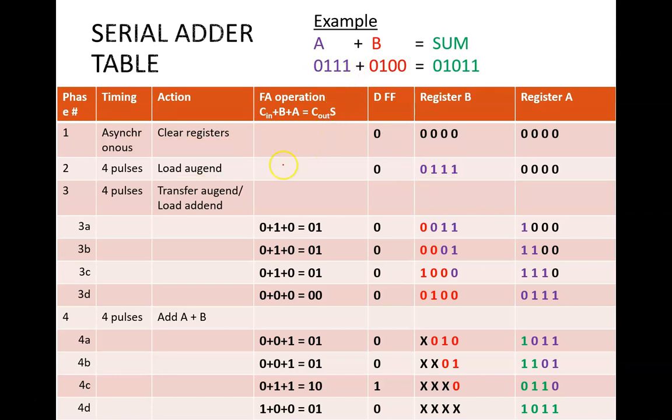Now we get to the interesting part, and each step is listed. This column indicates what the full adder is computing. The inputs come from the rightmost bits held in registers A and B, and the D flip-flop.